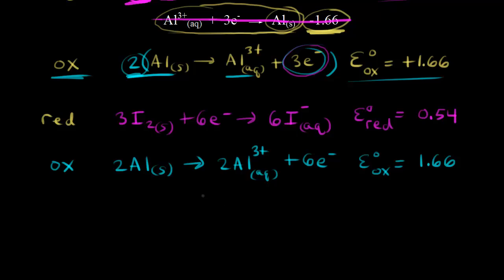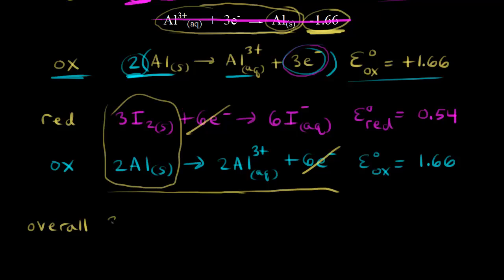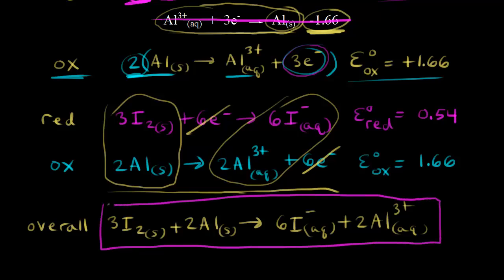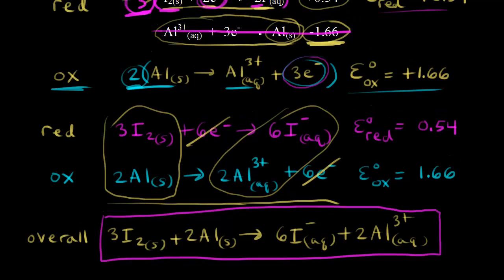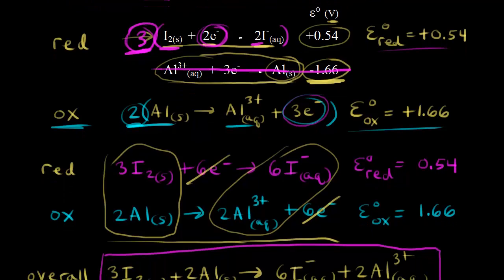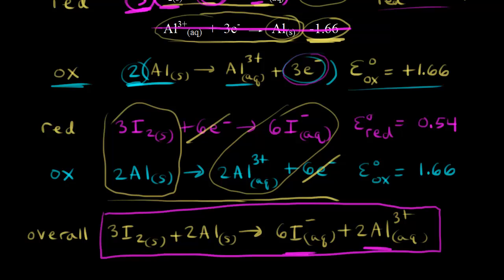Next, we add our two half reactions together. The six electrons on the reactant side and six electrons on the product side cancel out. Our reactants are 3I₂ plus 2Al, and our products are 6I⁻ plus 2Al³⁺. This matches our overall reaction. Let's double check: 3I₂ plus 2Al gives 6I⁻ plus 2Al³⁺ — yes, we got back our original reaction.